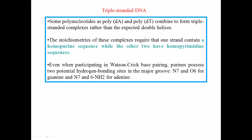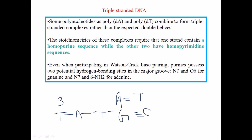Hoogsteen base pairing is slightly different from Watson-Crick pairing. In Watson-Crick, adenine pairs with thymine and guanine pairs with cytosine — one purine with one pyrimidine. In Hoogsteen pairing, three nucleotide bases can bond with each other. For example, one adenine can bond with two thymines, or one guanine can bond with two cytosines. These are examples of Hoogsteen pairing, not discovered by Watson and Crick.